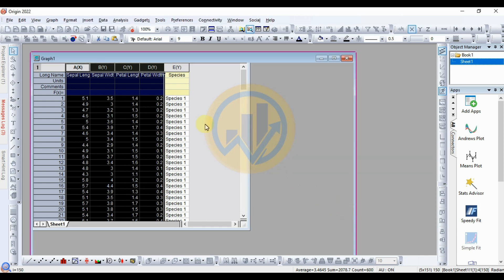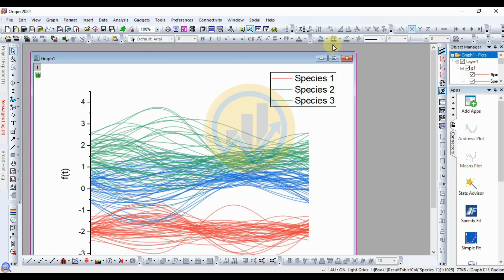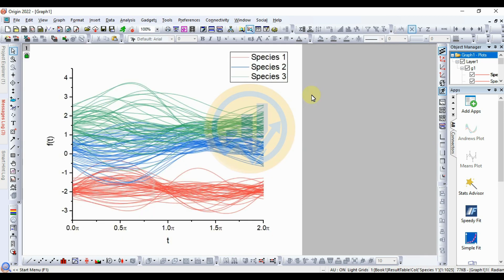Then click the OK button. Now the graph for the Andrews plot is created in OriginPro software. So this is the Andrews plot. Now customize the Andrews plot.